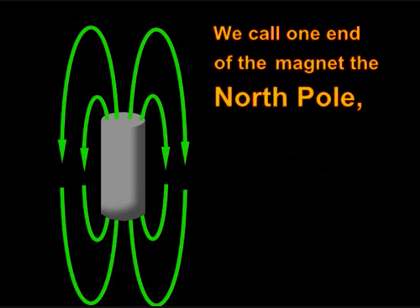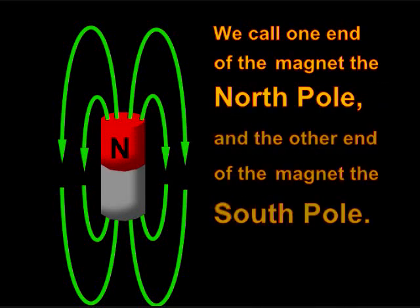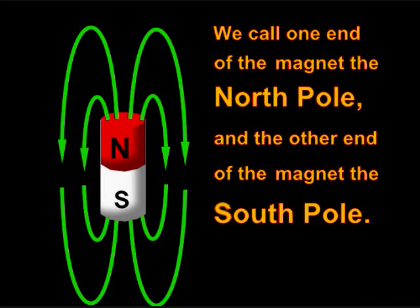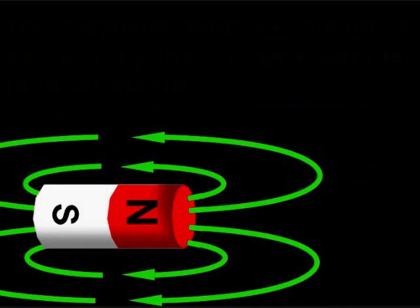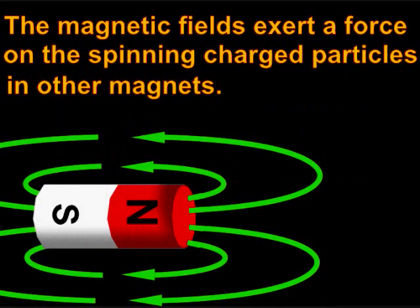We call one end of the magnet the north pole and the other end the south pole. The magnetic fields exert a force on the spinning charged particles in other magnets.